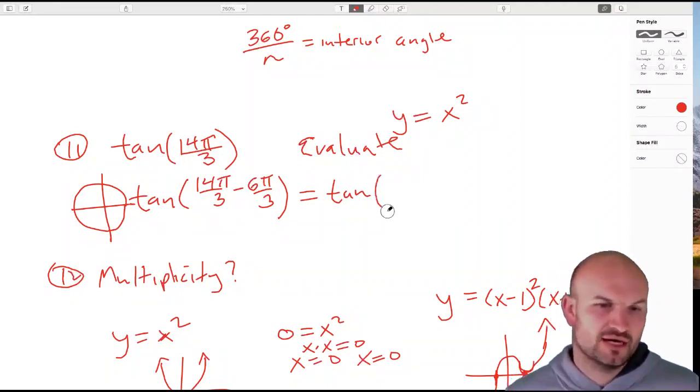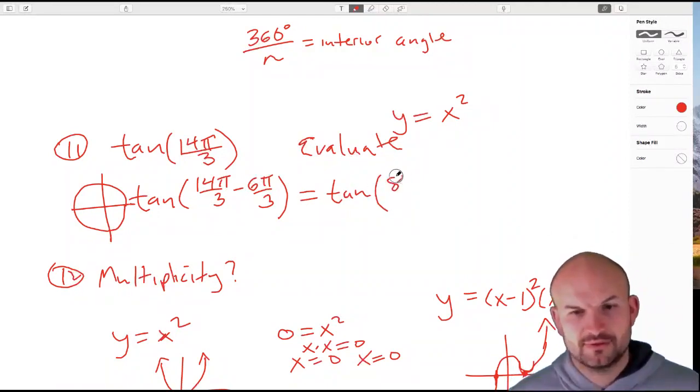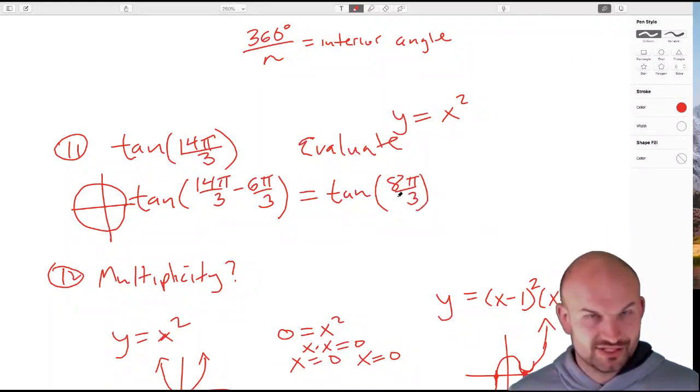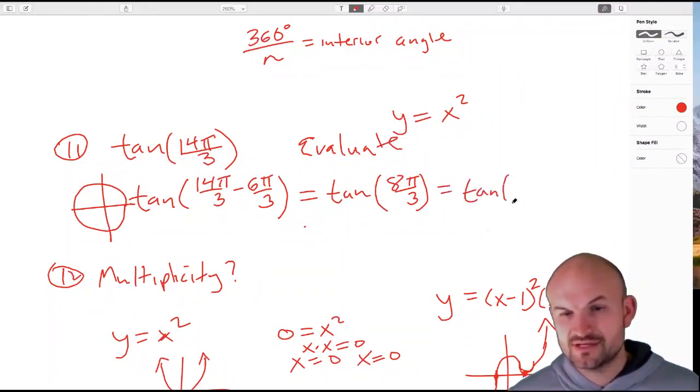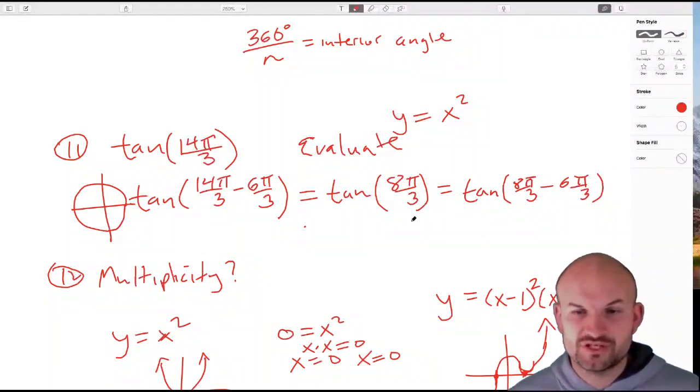I can do this again. I can subtract another revolution of 6π/3, so that's exactly what I'm going to do. Tangent of 8π/3 minus another revolution of 6π/3. When I subtract another revolution, I'm left with tangent of 2π/3.